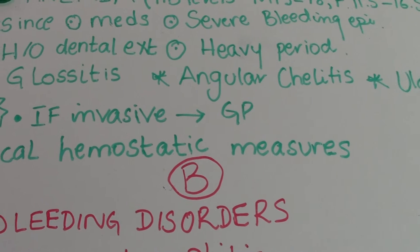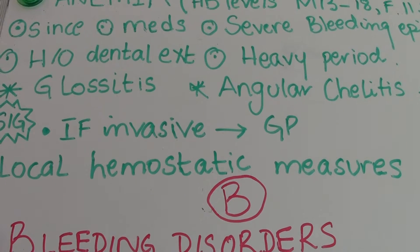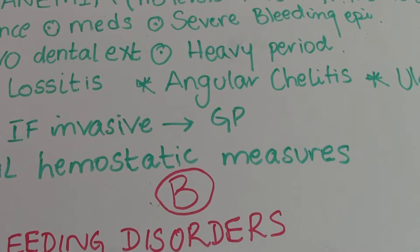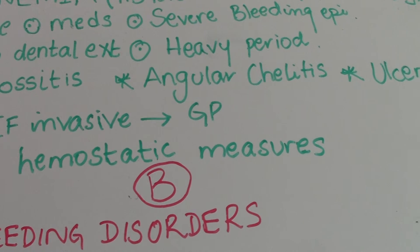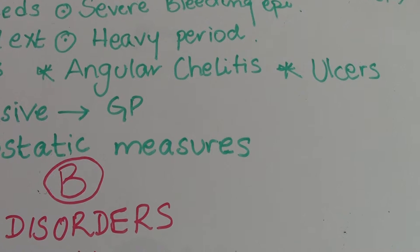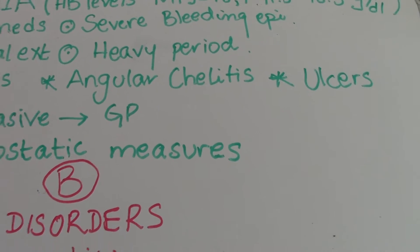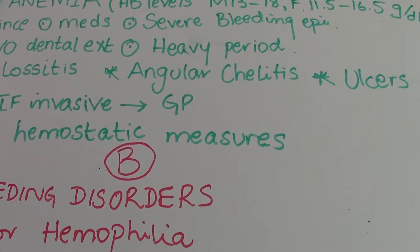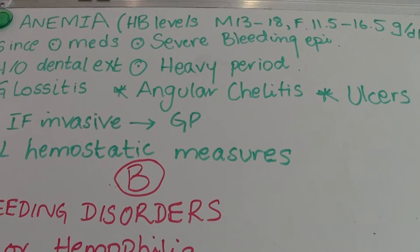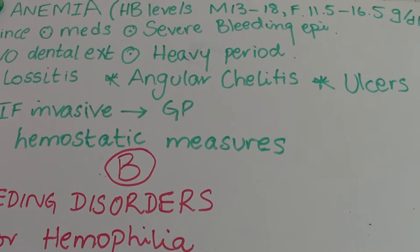Anemic patients sometimes have clinical presentations like glossitis, angular cheilitis, and ulcers. We don't ask using those terms — instead we ask if they've noticed any irritation or burning sensation on their tongue, on the corners of their mouth, or any ulcers in their mouth that don't heal. These are the three clinical conditions we can observe in anemic patients.